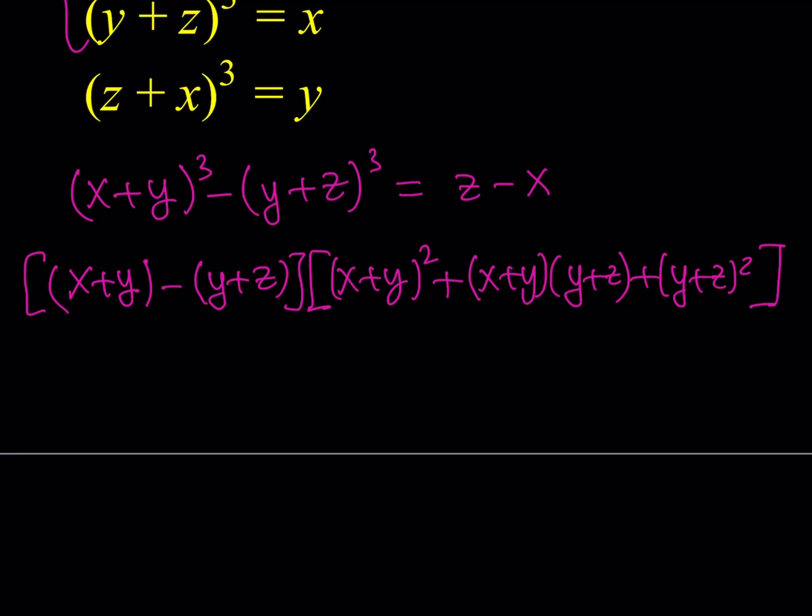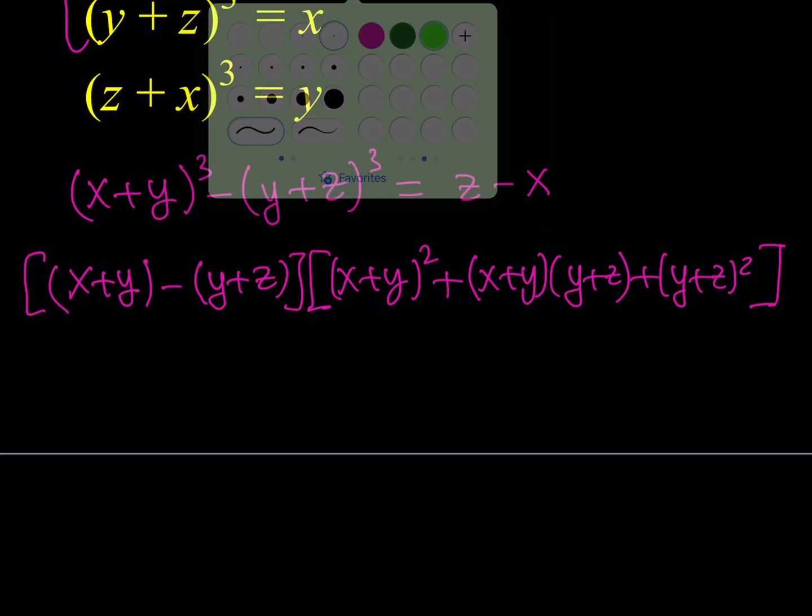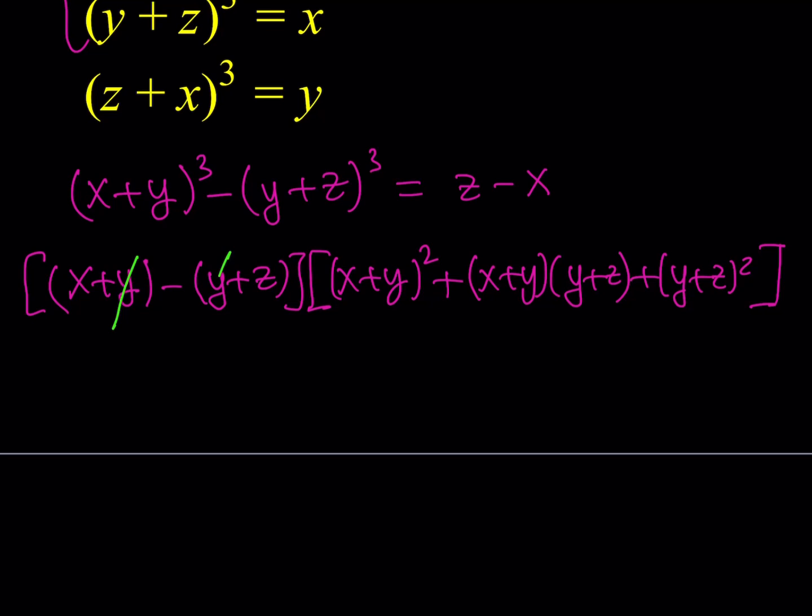Here, notice that the y is going to cancel out, right? Okay. So y cancels out. We end up with x - z. Now, in order to make this easier, let me go ahead and expand this here. This is going to be x² + 2xy + y². This is going to be xy + xz + y² + yz. And this is going to be y² + 2yz + z². Then I can just go ahead and add like terms.